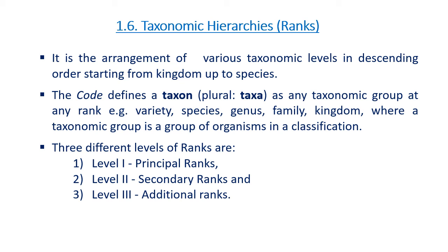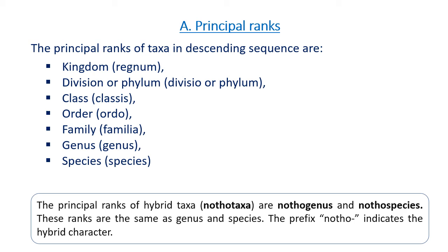The different levels of ranks are: Level 1 — principal ranks; Level 2 — secondary ranks; Level 3 — additional ranks. The principal ranks of taxa in descending sequence are Kingdom, Division, Class, Order, Family, Genus, and Species.